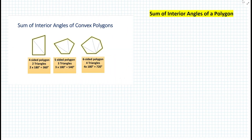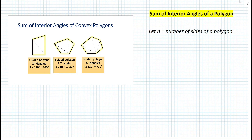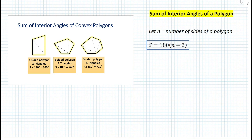So let's say we want to find the sum of all the interior angles of a polygon. We let n equal the number of sides of a polygon. We notice that the number of triangles you can draw inside a polygon is always going to be the number of sides minus two. Then once we do n minus two, we multiply that by 180, because 180 degrees is the sum of all the interior angles of each of those triangles. Therefore, the sum of the interior angles of a polygon is simply 180 times (n minus 2).